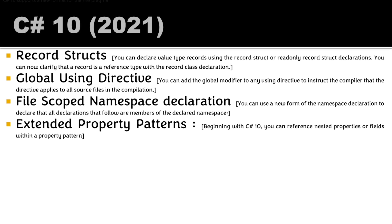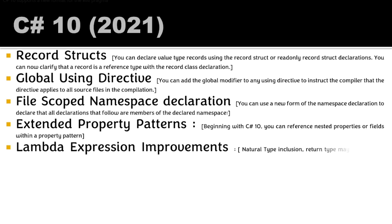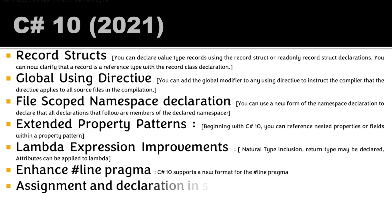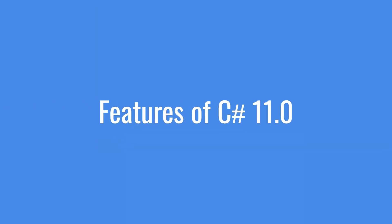C# 10 also brought lambda expression improvements: natural types, declared return types, and the ability to apply attributes to lambdas. Enhancements to line pragmas introduced a new format. Assignment and declaration can now be done in the same deconstruction expression.